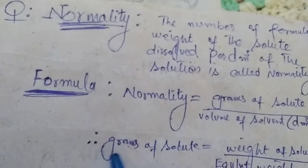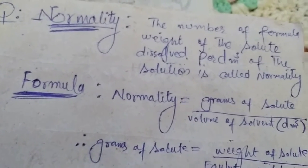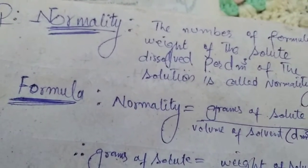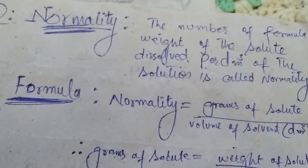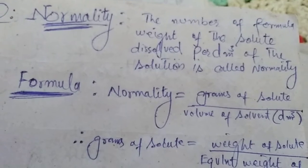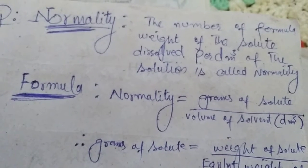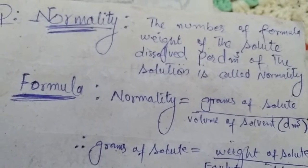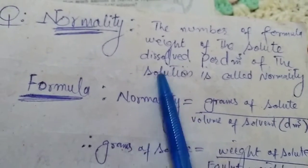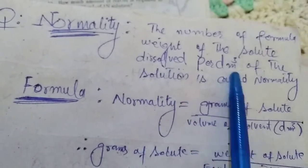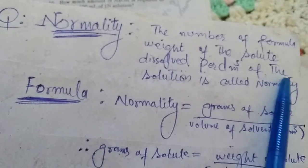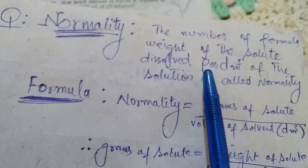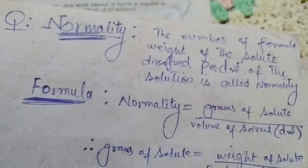Bismillahirrahmanirrahim. Friends, till now we have studied much more about the moles. Today I will teach you stoichiometric equations about the normality. First of all, we will define what is normality. Normality is the formula weight of the solute dissolved per dm³ of the solution. It means we will dissolve one formula weight in one liter.